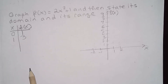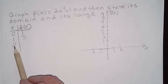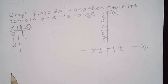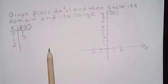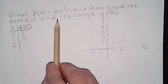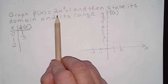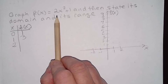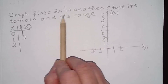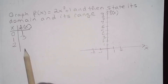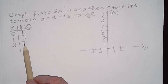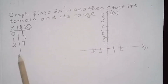We can choose x equal to two. You plug it into the function and get two squared, which is four. Four times two is eight, and eight plus one is nine. So when x is two, f of x is nine.